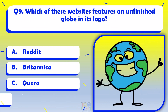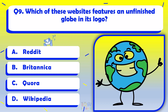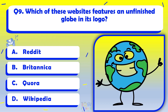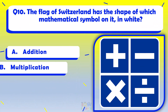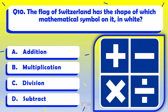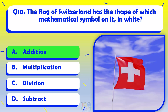Which of these websites features an unfinished globe in its logo? Wikipedia. The flag of Switzerland has the shape of which mathematical symbol on it, in white? Addition.